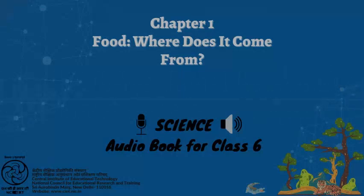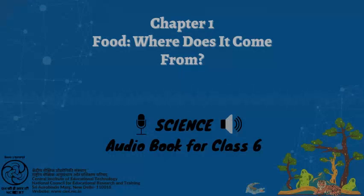Things to think about: 1. Does everyone around you get enough food to eat? If not, why? 2. What are the ways we can think of to avoid wastage of food? 3. Chapter 1 of the total 16 chapters of the book ends here.